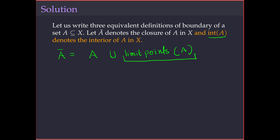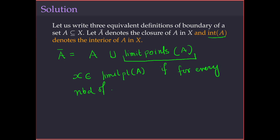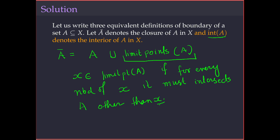What are limit points of A? A point x belongs to the limit points of A if for every neighborhood of x, it must intersect A at a point other than x itself. So x is a limit point means that if you take any neighborhood of x, it must intersect A at some point other than x.